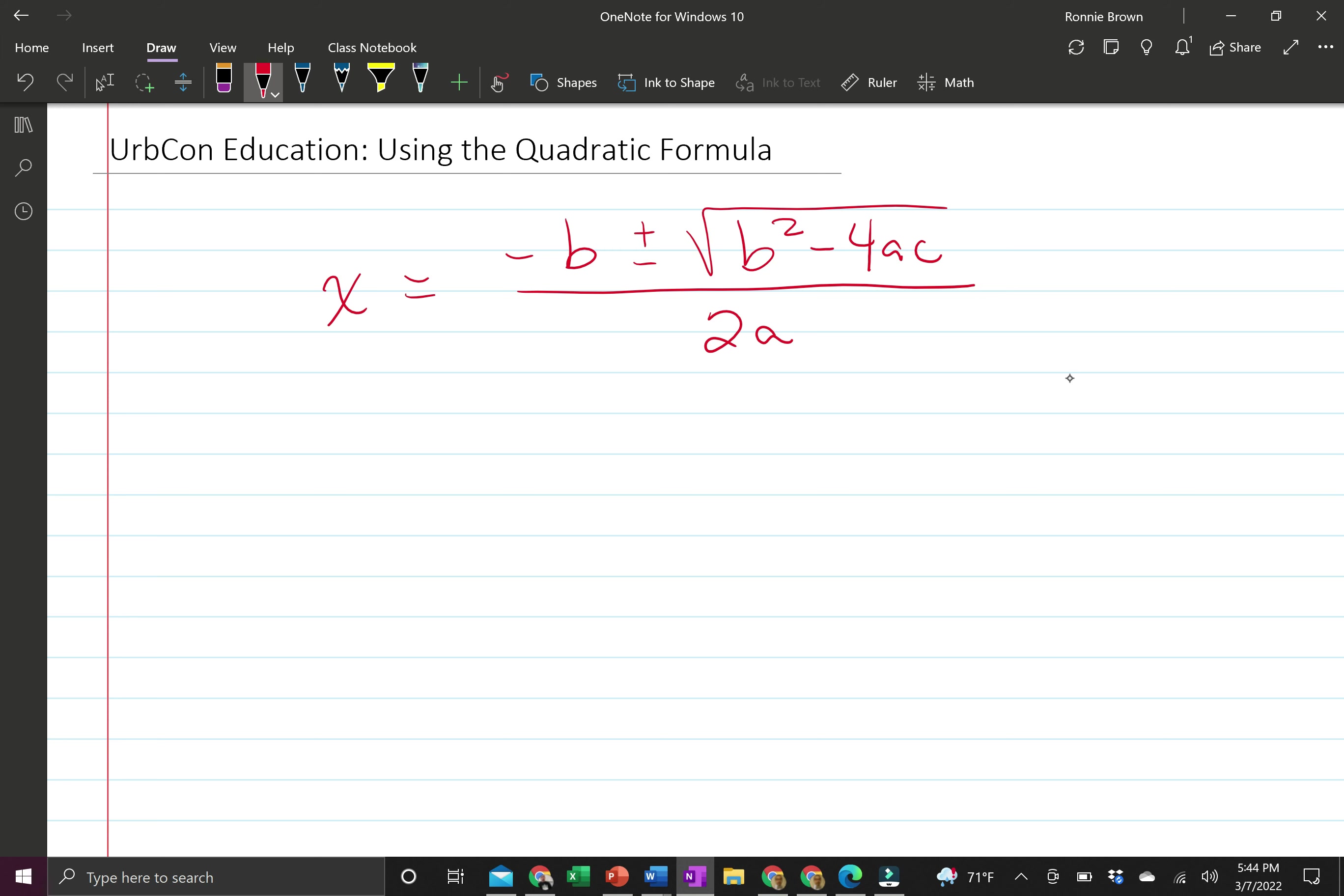We're going to use this quadratic formula to solve examples such as this. Here we have x squared plus 5x minus 6 equals 0. This is a quadratic equation because the largest exponent here is a 2. The first step is to make sure that the quadratic equation is in standard form, and this is standard form here.